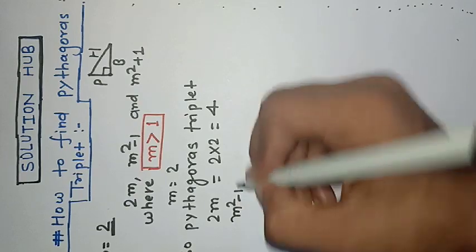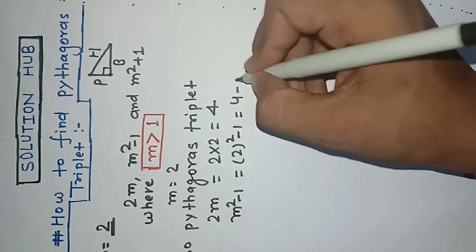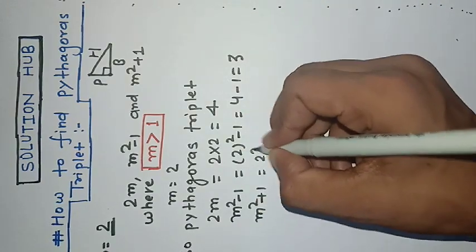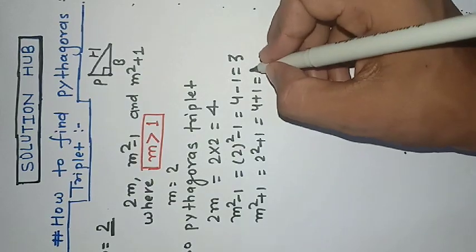Second, m squared minus 1 means 2 squared minus 1 equals 4 minus 1 equals 3. Next is m squared plus 1 equals 2 squared plus 1 equals 4 plus 1 equals 5.